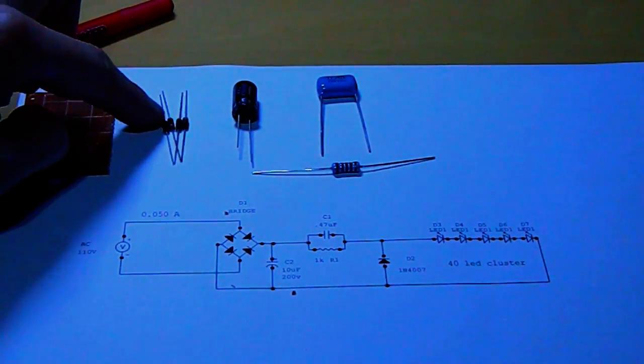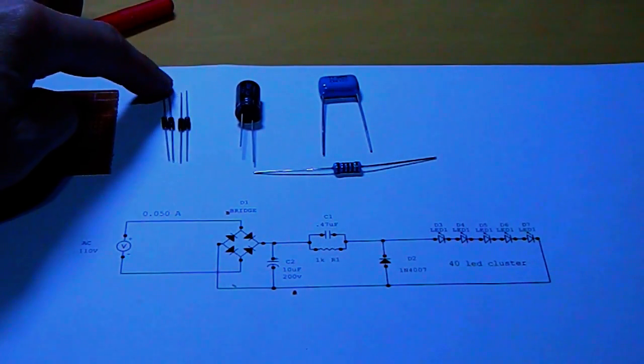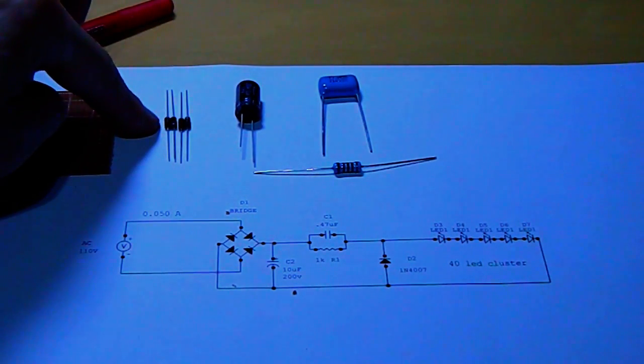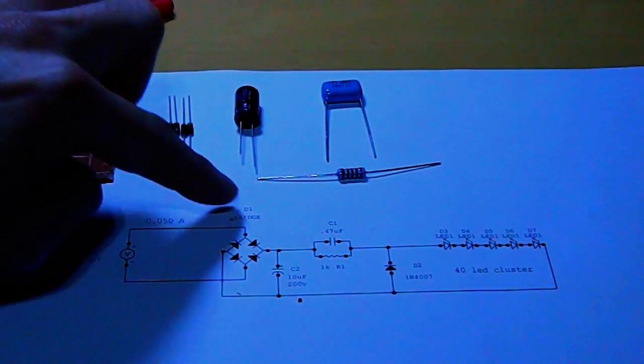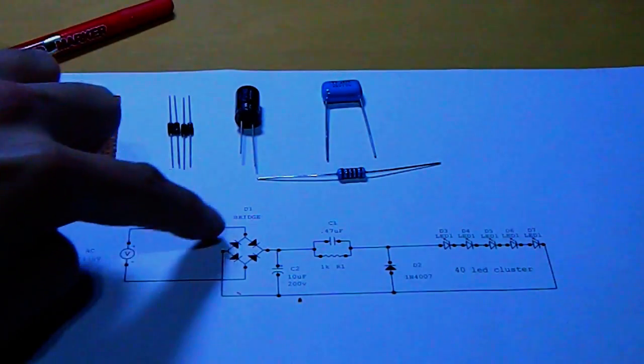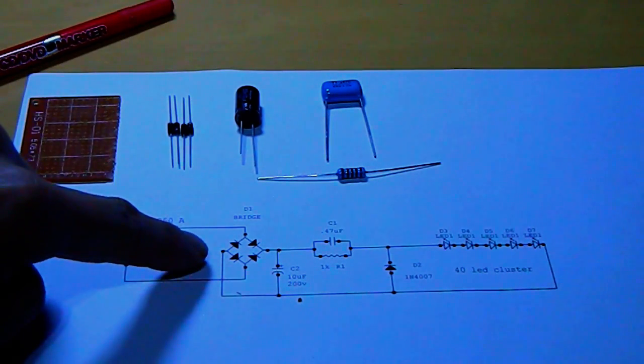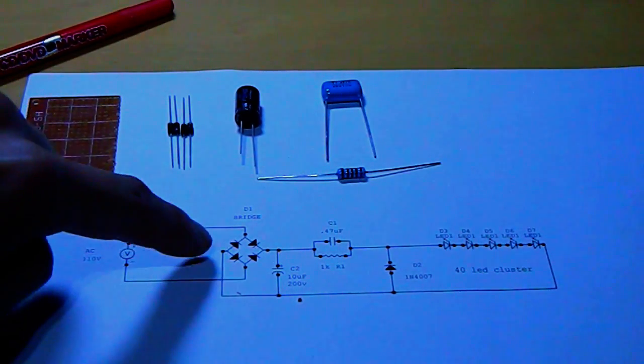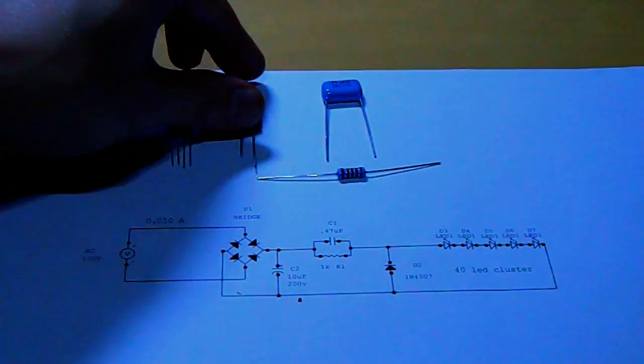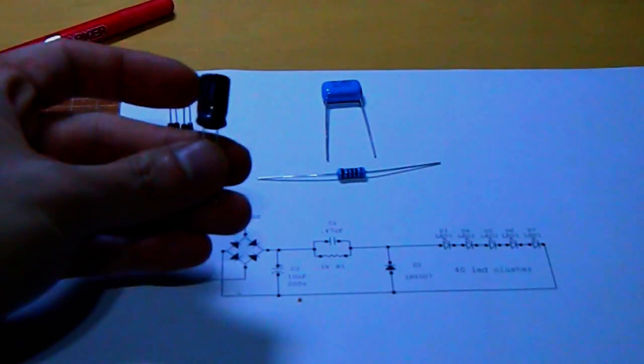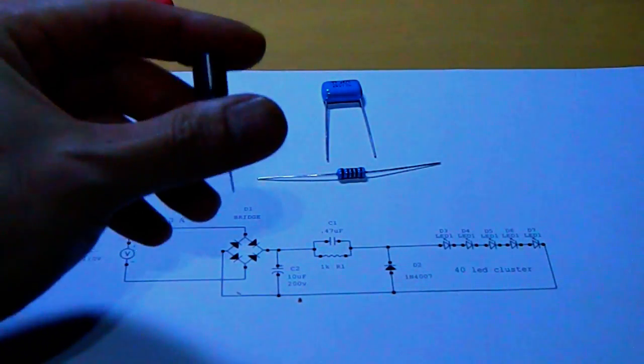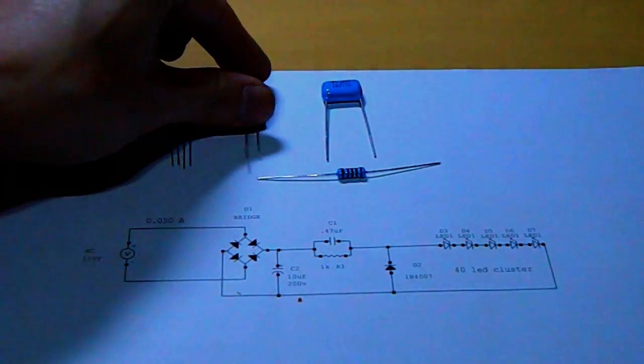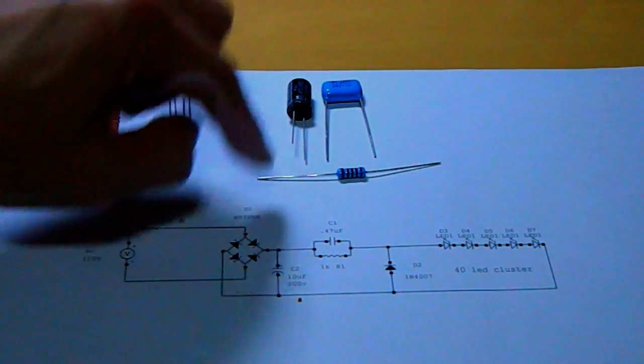Here you need 4 diodes, 1N4007, to make the bridge rectifier. It is a full bridge. Here is a 10 microfarad 200 volts cap. It is in here.